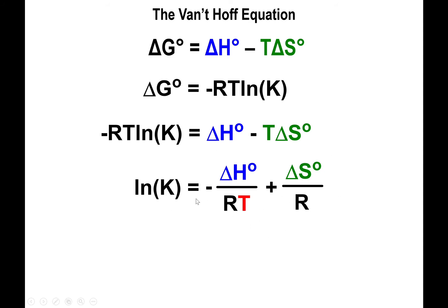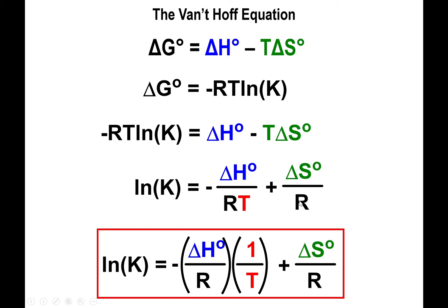This gives us: ln(K) equals negative ΔH over RT plus ΔS over R. Rearranging slightly: ln(K) equals negative ΔH over R times 1/T plus ΔS over R. This has the format of a linear equation where Y is ln(K) and X is the inverse temperature (1/T).